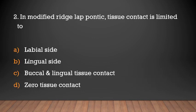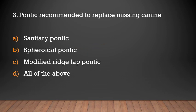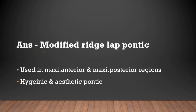In modified ridgeline pontic, tissue contact is limited to: labial side, lingual side, buccolingual tissue contact, or zero tissue contact? Labial side. Buccolingual tissue contact is present in saddle pontic, and zero tissue contact is seen in hygienic or sanitary pontic. The pontic recommended to replace a missing canine is the modified ridgeline pontic, which is used in maxillary anterior and posterior regions and is a hygienic and aesthetic pontic.